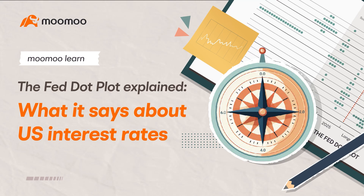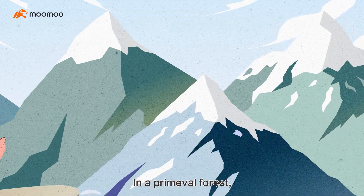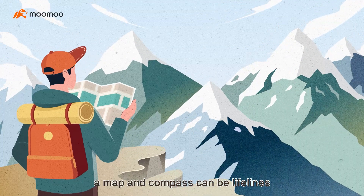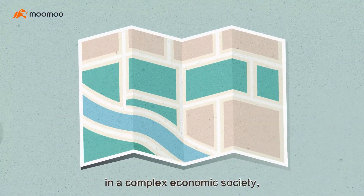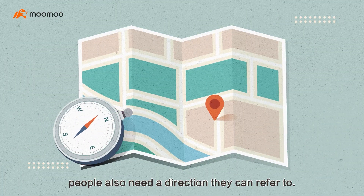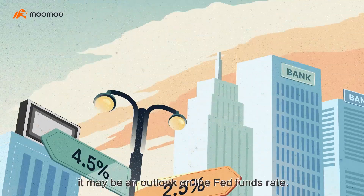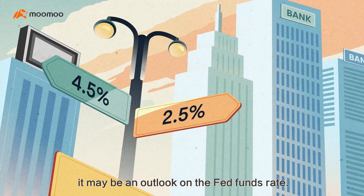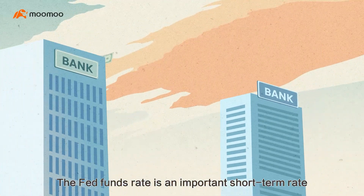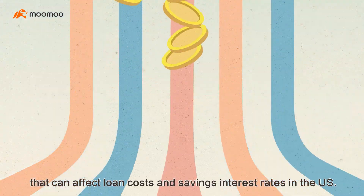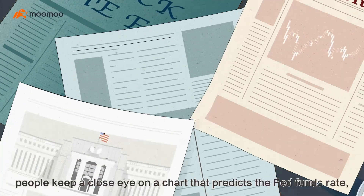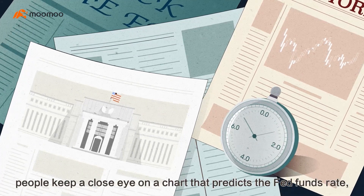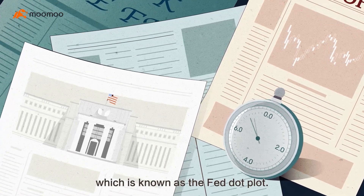The Fed dot plot explained — what it says about U.S. interest rates. In a primeval forest, a map and compass can be lifelines to help adventurers find the right direction. Likewise, in a complex economic society, people also need a direction they can refer to — for example, an outlook on the Fed funds rate. The Fed funds rate is an important short-term rate that can affect loan costs and savings interest rates in the U.S. As a result, people keep a close eye on a chart that predicts the Fed funds rate, which is known as the Fed dot plot.